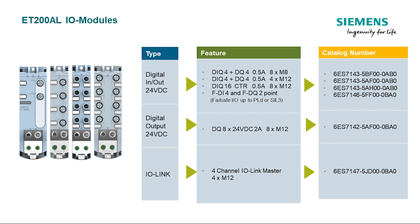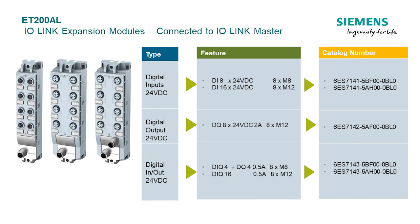The 16 DI/DO module can be used as a configurable 16-point module. If you choose to use the counters, each counter will have its own independent output on the module, and you will still have eight other configurable points. The next type is a digital output rated up to 2 amps per output, which is great for solenoids and other high-amperage loads. The last types are the I/O-Link master module and I/O-Link expansion modules, which can be used with the ET200AL I/O-Link master or any other approved I/O-Link master, allowing up to 16 points of I/O on a standard I/O-Link master channel.